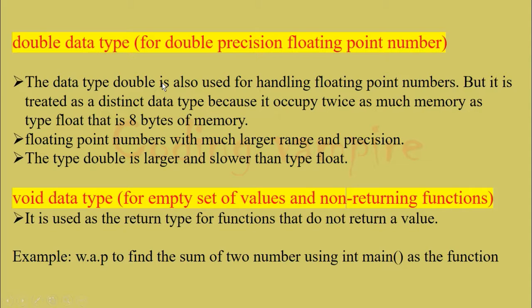Double data type: The data type double is also used for handling floating point numbers. But it is treated as a distinct data type because it occupies twice as much memory as type float. That is 8 bytes of memory. So floating data type occupies 4 bytes of memory, but whereas double data type occupies 8 bytes of memory.